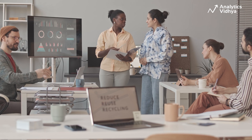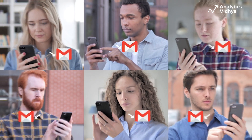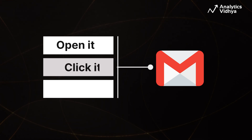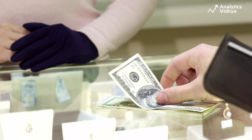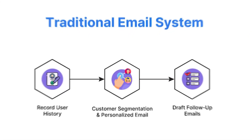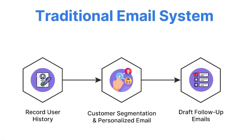Then the marketing team segments customers, sending tailored emails to each group. Based on their response — did they open it, click it, or ignore it? — you follow up with a reminder or a new offer. This cycle continues until the lead either disappears or converts into a paying customer. Complicated and tiring, right? That's why the traditional system needs a serious update.